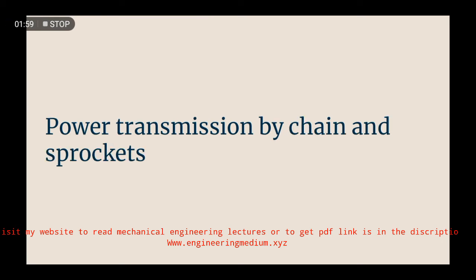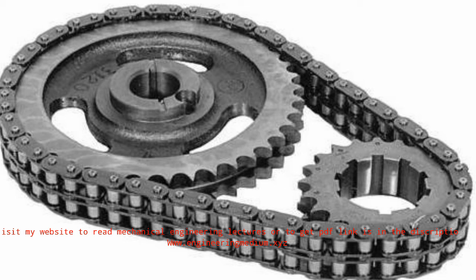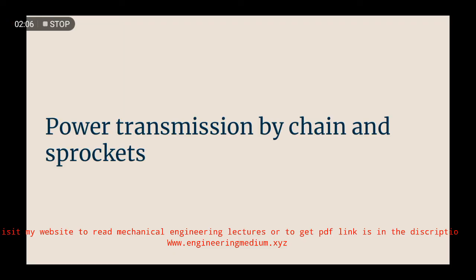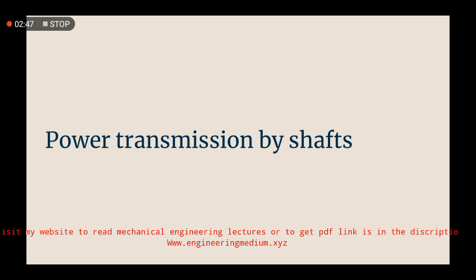Our next topic is mechanical power transmission by chain and sprockets. Power transmission by chain and sprockets is very common for power transmission in small areas. We can transfer a low amount of power by chain and sprockets. Power transmission through chain and sprockets is not considered a highly reliable method as it is used for lower amounts of load. This method is generally used in bicycles and motorcycles.